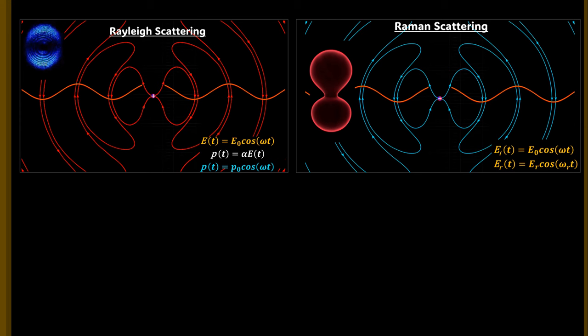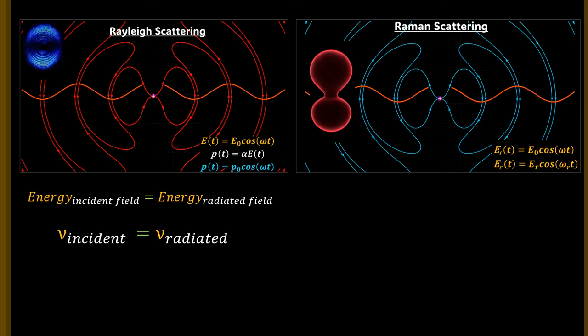Comparing Rayleigh scattering and Raman scattering: in Rayleigh scattering, the energy of the radiated and incident electric fields is the same, indicating that the incoming electromagnetic field is not interacting significantly with the molecule and causing no change in energy. Thus, it does not provide any molecular information.